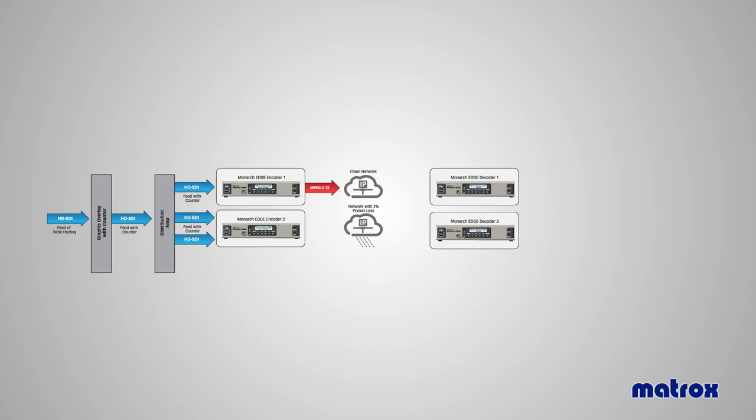These signals are being coded as an MPEG-2 transport stream in PHY encoder 1 and being sent to our Edge decoder. And on the dirty network or lossy network, we're encoding both an MPEG-2 TS stream as well as an SRT stream and sending those both to the same decoder on the other end of the network.